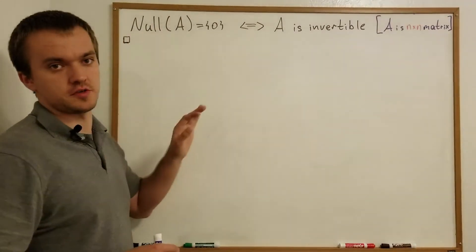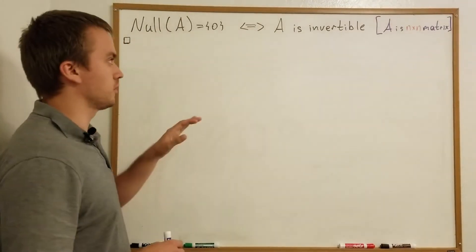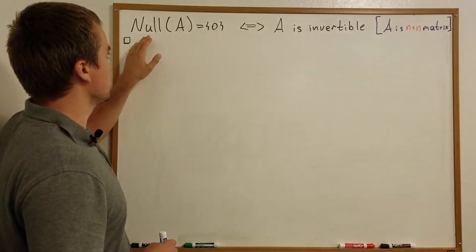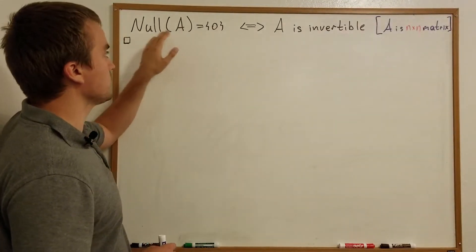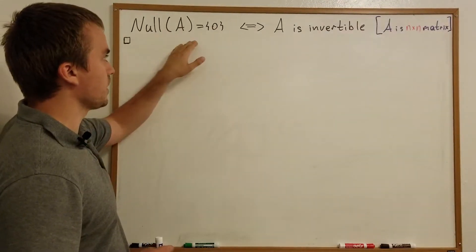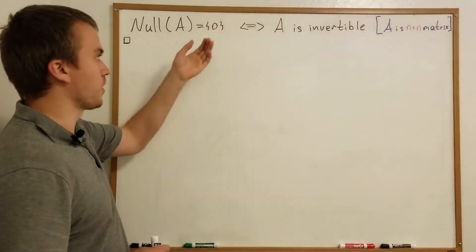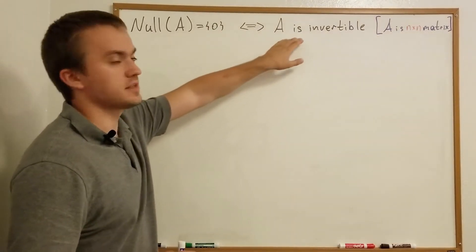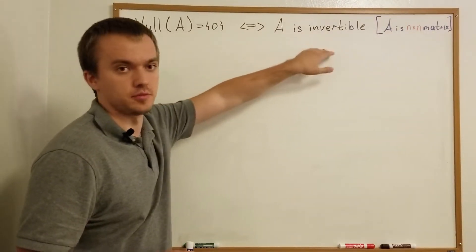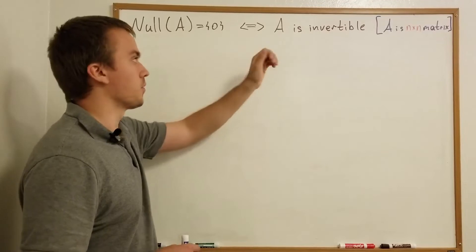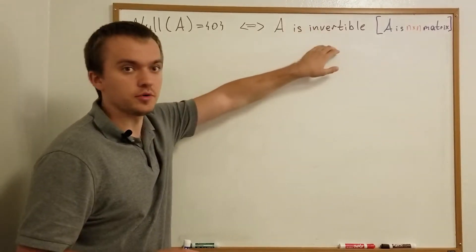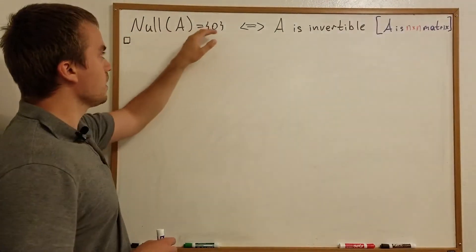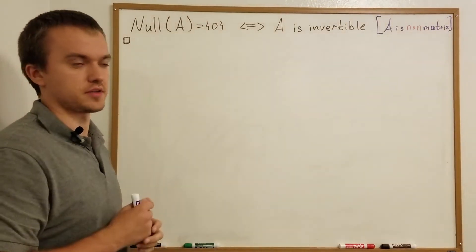In this video I want to prove this result which I'm going to use in the future. I want to say that if the null space of A is just the zero vector, then I can say this matrix is invertible, and otherwise if my matrix is invertible then the null space of A is going to be just the zero vector.